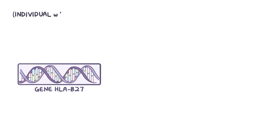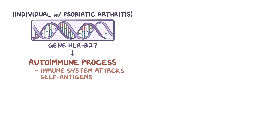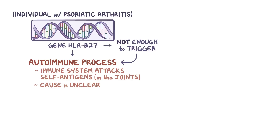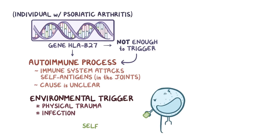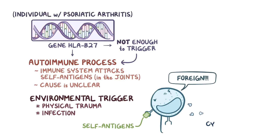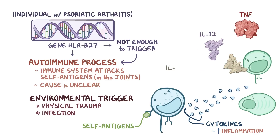Many individuals with psoriatic arthritis have a specific version of the gene HLA-B27, which somehow leads to an autoimmune process. In these individuals, the immune system attacks self-antigens, specifically ones in the joints. Exactly what causes this is unclear, but the gene itself is not enough to trigger psoriatic arthritis — often an environmental trigger like physical trauma or an infection seems to play a role as well. Once the self-antigens are seen as foreign, T cells release cytokines, which increases inflammation and stimulates other immune cells to release tumor necrosis factor or TNF, as well as interleukin-12 and interleukin-23.